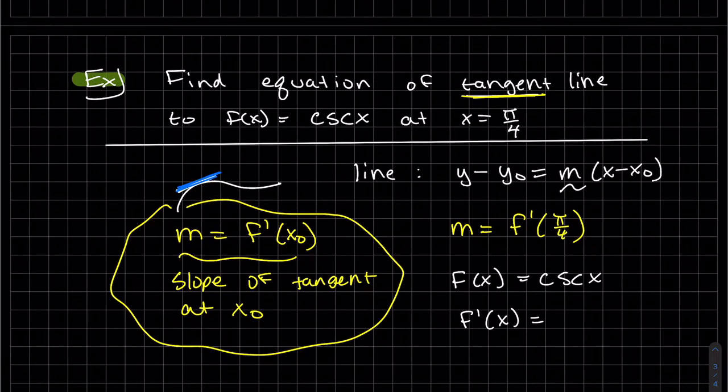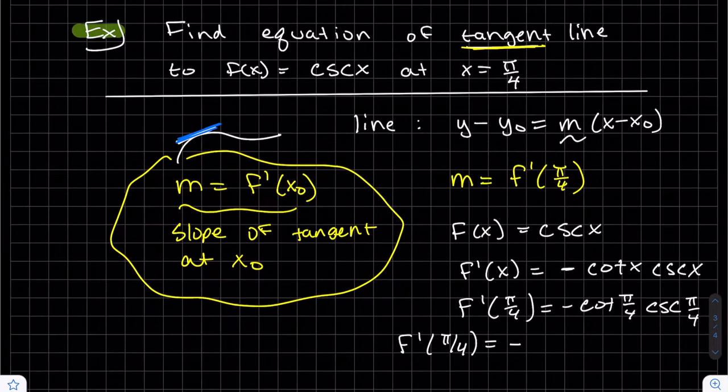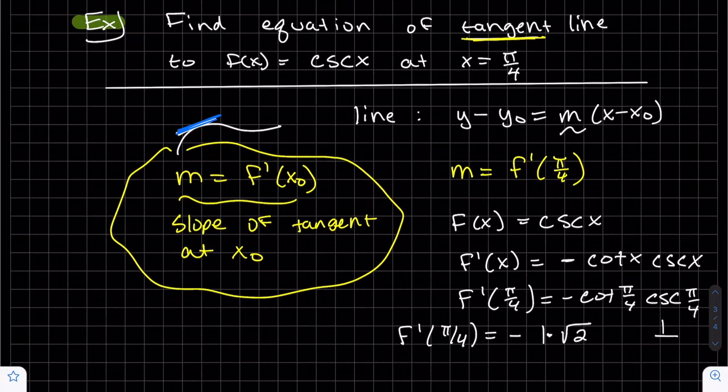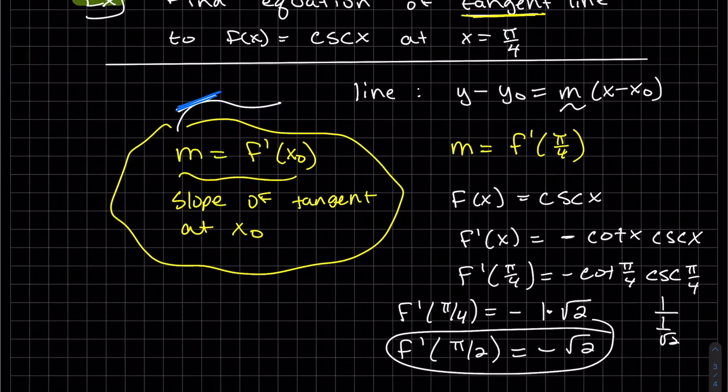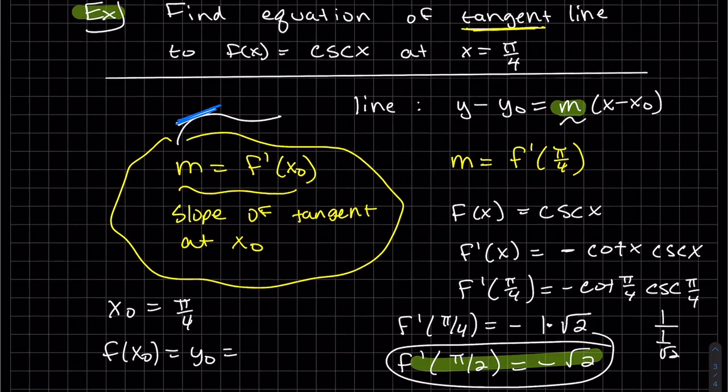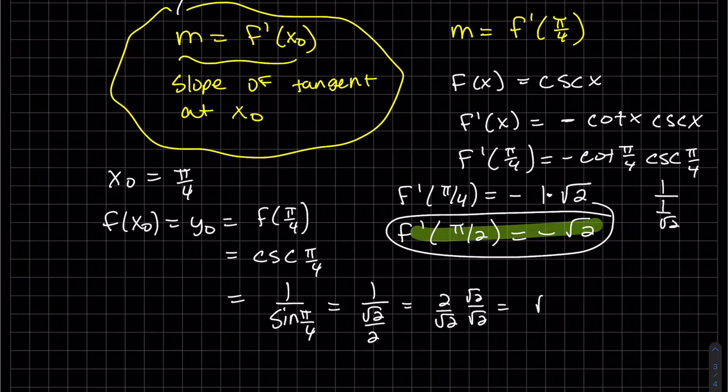It's the derivative of cosecant. And then we plug in pi over 4. 45 degrees, that's going to be 1. Cosecant of pi over 4 is 1 over sine of pi over 4. That's the square root of 2. That's 1 over square root of 2 over square root of 2. Or 1 over 1 over square root of 2. Because square root of 2 over square root of 2 is that. And I like that. Plug that in there. And my x knot is pi over 4. My f of x knot is my y knot for my formula.